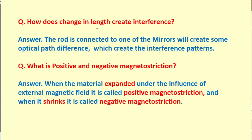How does change in length create interference? The rod is connected to one of the mirrors which creates some optical path difference, and which can create the interference patterns. What is positive and negative magnetostriction?